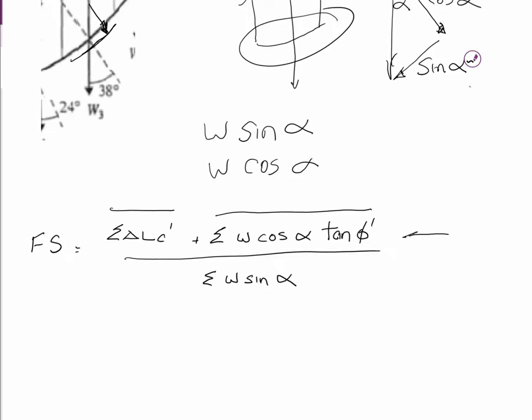So you'll notice all this stuff at the top is a function of something to do with the soil. There's a phi value there, and there's a c value there. That's the resisting moment.